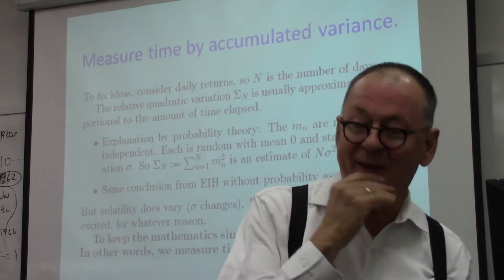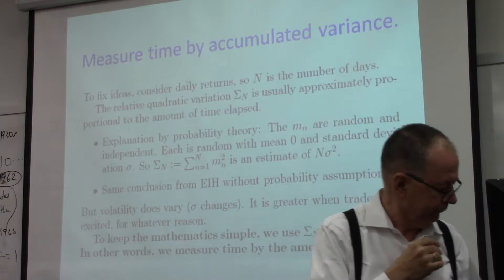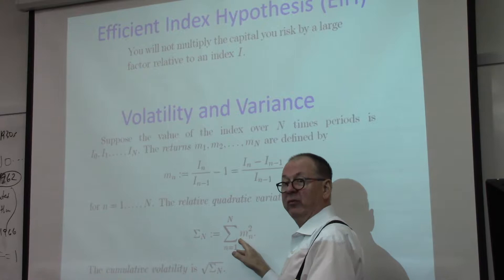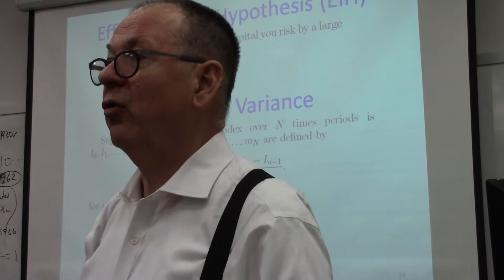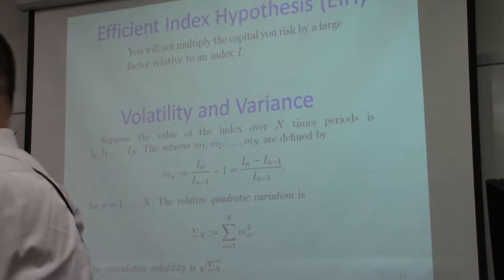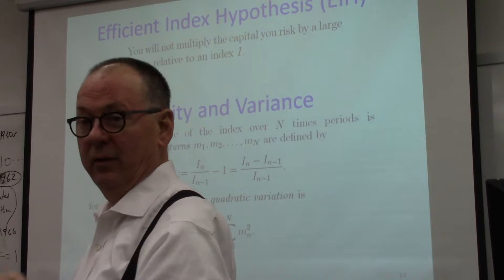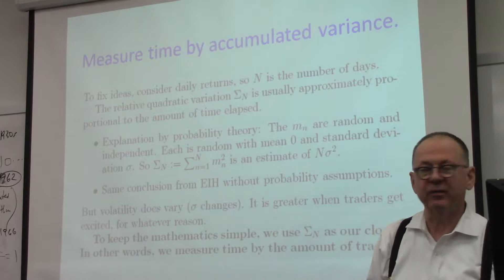The first step to make this explanation comprehensible is that I'm going to measure time by the accumulated variance. Sometimes the stock market gets nervous and the volatility goes up and down very fast — think of that as time moving faster. Then things calm down and the volatility is not going up — time is moving more slowly. So we aren't measuring in calendar time; we're measuring in volatility time.